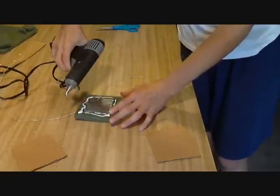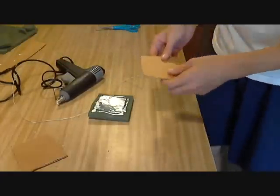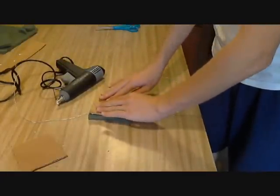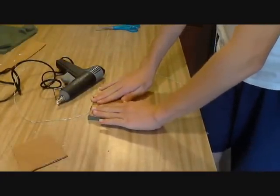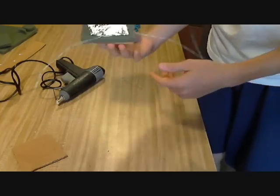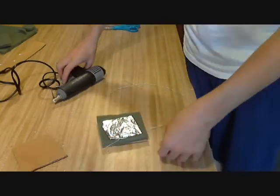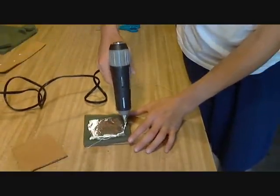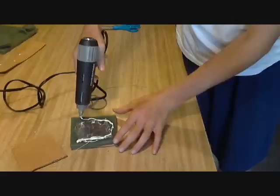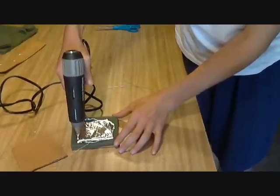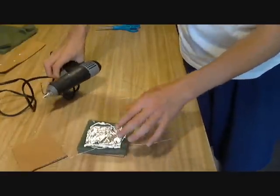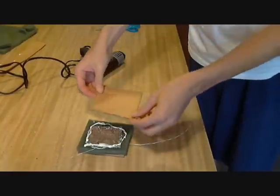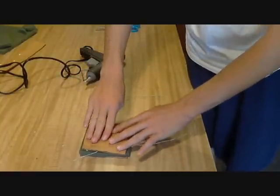And then you're going to take your piece of cardboard and you're just going to push it right down right there. So, now you're going to turn over to the other side and do the same thing. Take your hot glue, go all the way around, and then take your cardboard and just press it down.